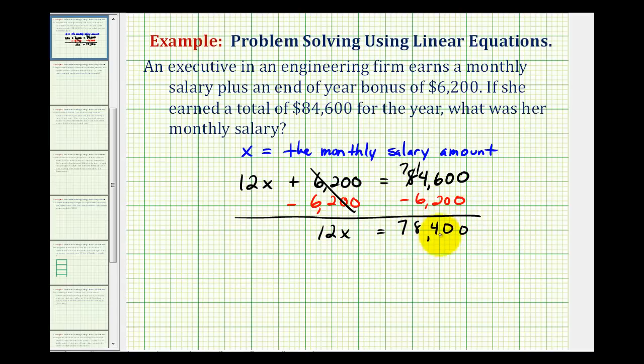Notice how this $78,400 would represent the amount of money she would make per year without the bonus, and then to determine the monthly salary, or to solve this for x, we'll divide both sides by 12.